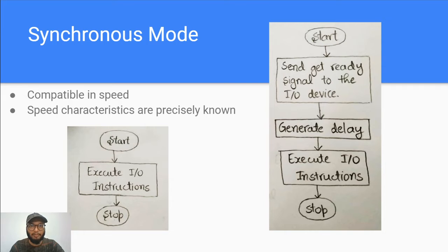We generate some delay until the device is ready for transferring data, then execute the IO instruction and stop. This is the synchronous mode of data transfer, where the status of the IO device is not checked. Unfortunately, this cannot be used when the speed characteristic of the IO device is not known.